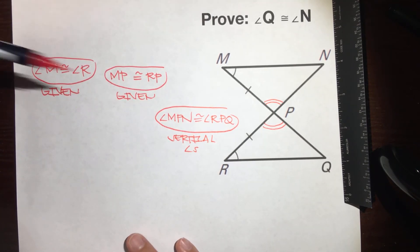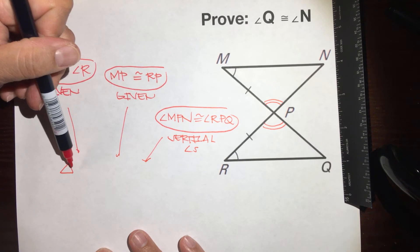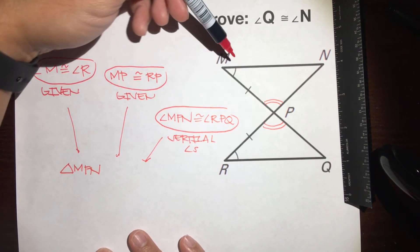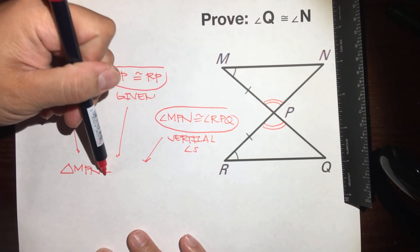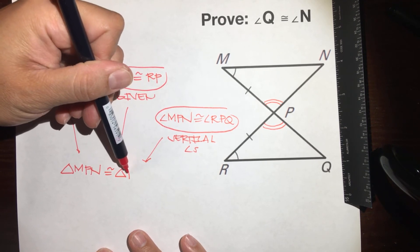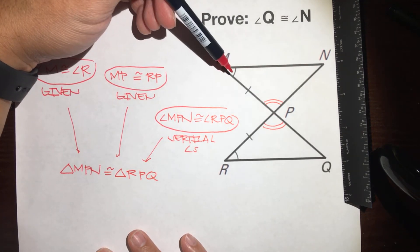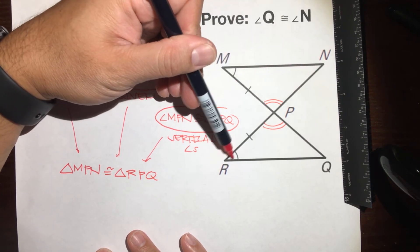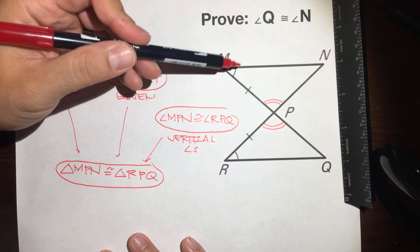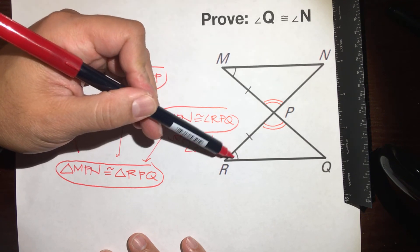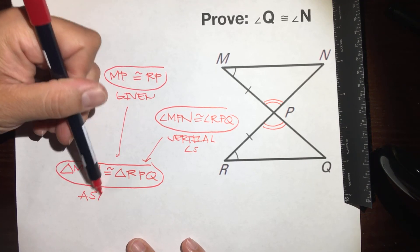It looks like we have enough information to come to a conclusion. Triangle MPN is congruent to triangle RPQ. We have angle, side, angle — angle, side, angle — so we have an ASA sandwich, and the triangles are congruent by angle-side-angle congruency.